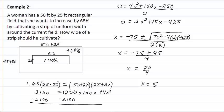So what that means is that she's going to cultivate another 5 feet all the way around.